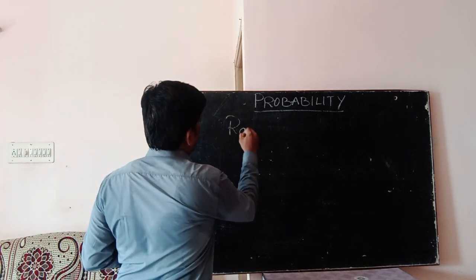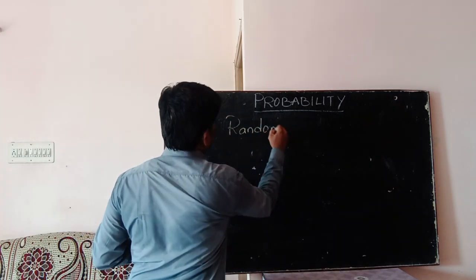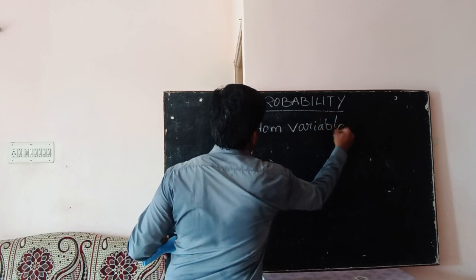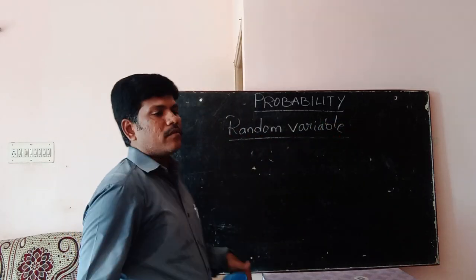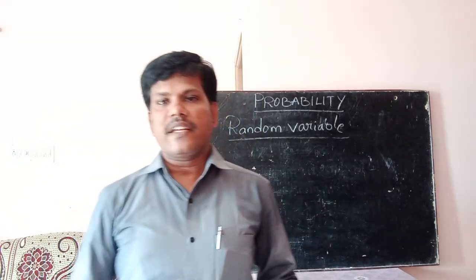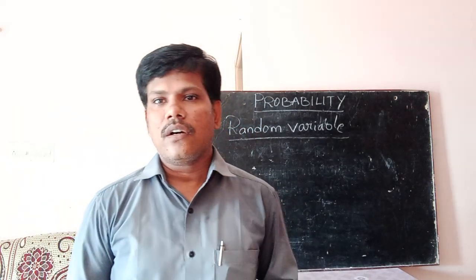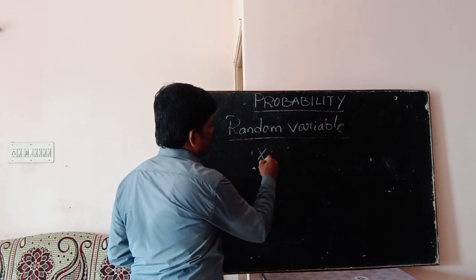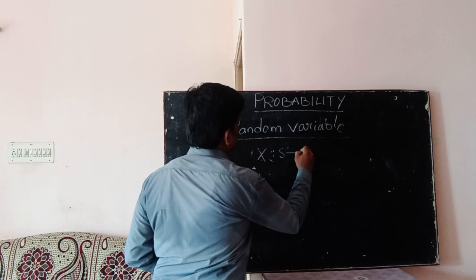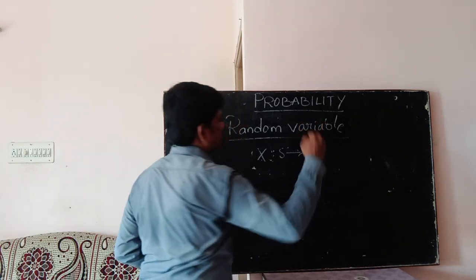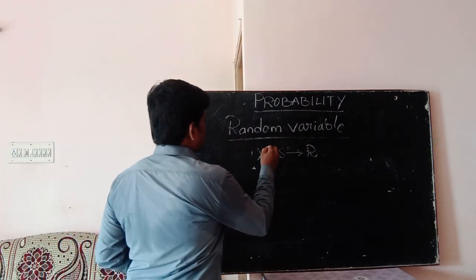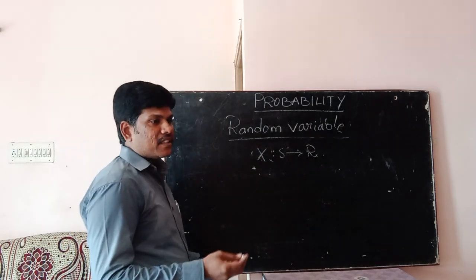First, see the definition of random variable. A random variable is a real number associated with the outcome of an experiment — that is called a random variable. It is denoted by capital X, which is a mapping from the sample space to the real numbers.